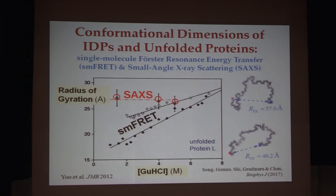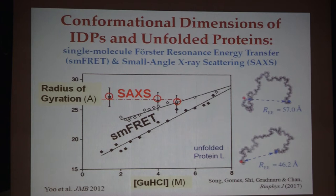This is an example for Protein L as a function of guanidine hydrochloride. At high denaturant concentrations they come out to be about the same. But when you lower the denaturant, SAXS gives you approximately a constant radius of gyration. SAXS is a direct measurement of radius of gyration.